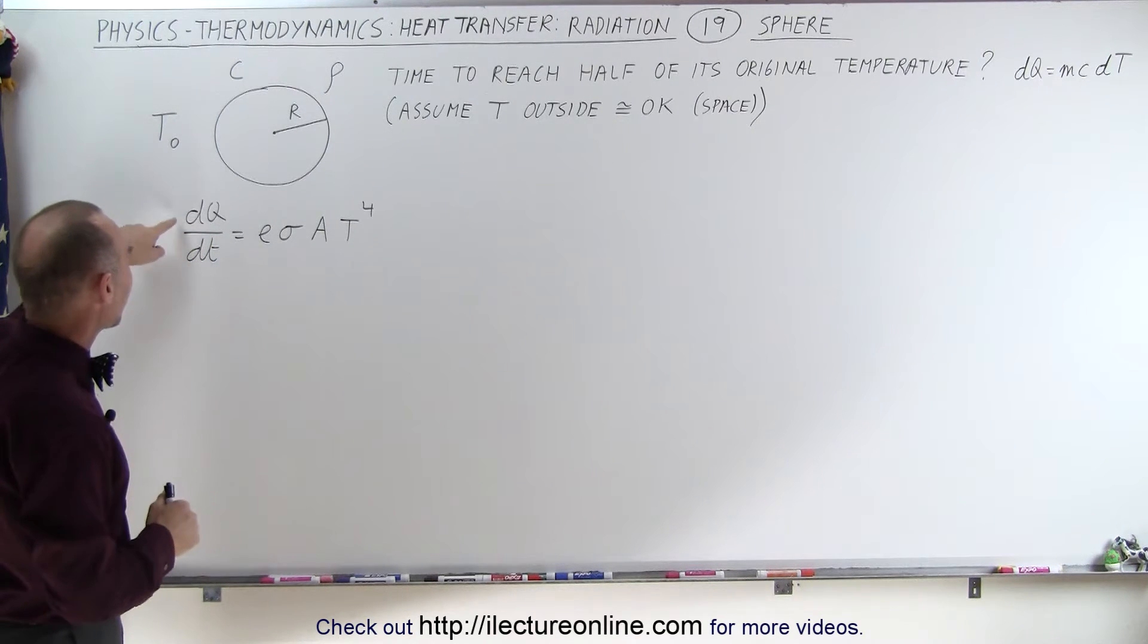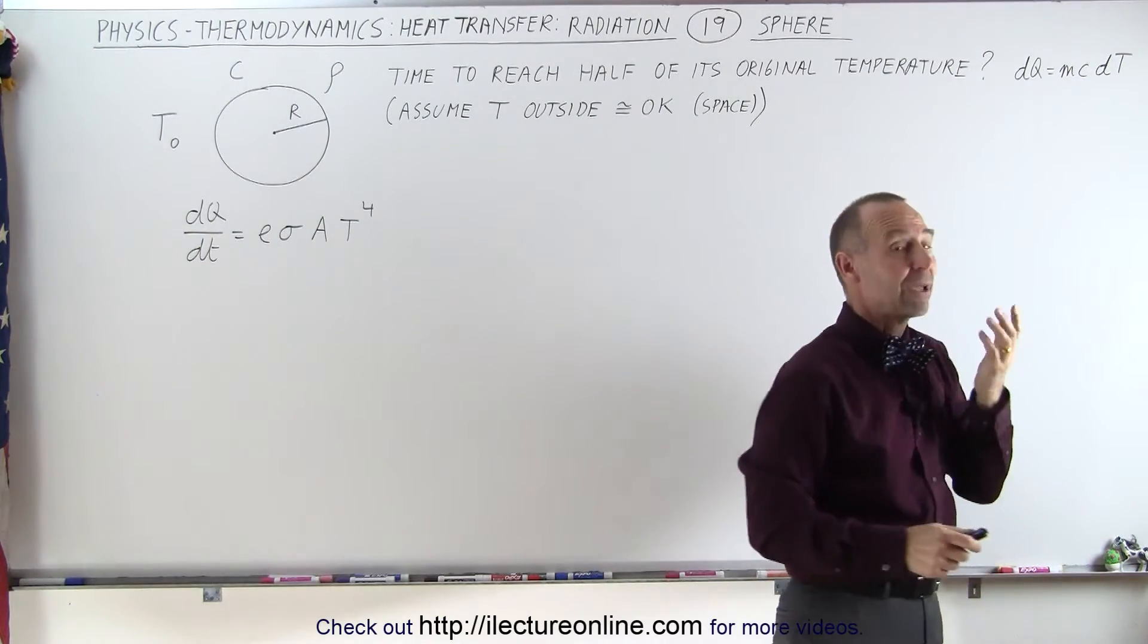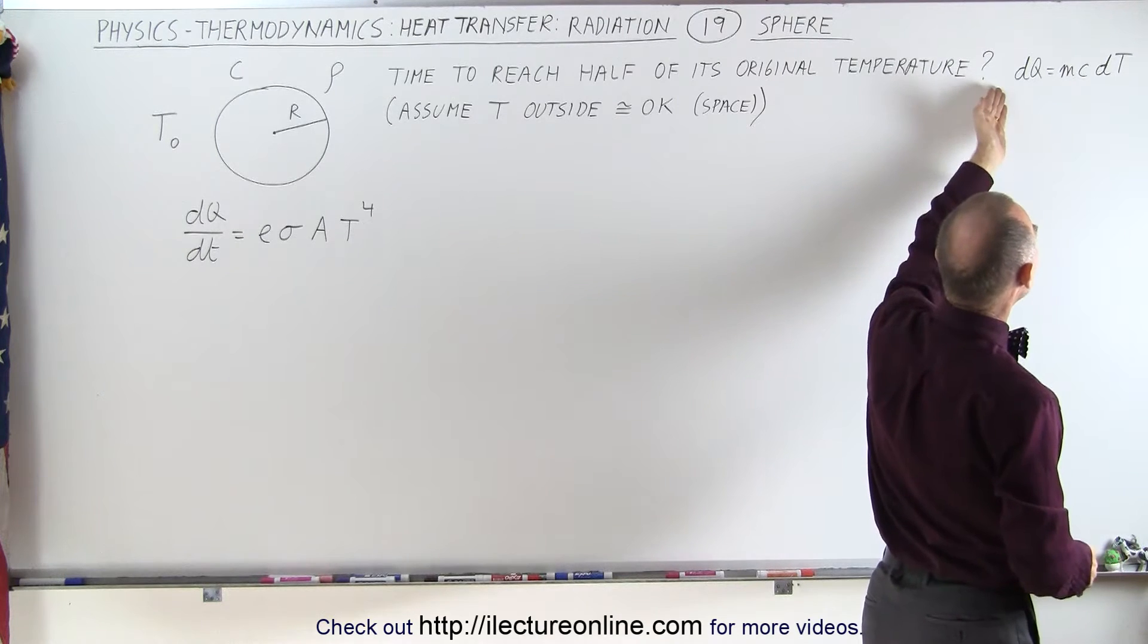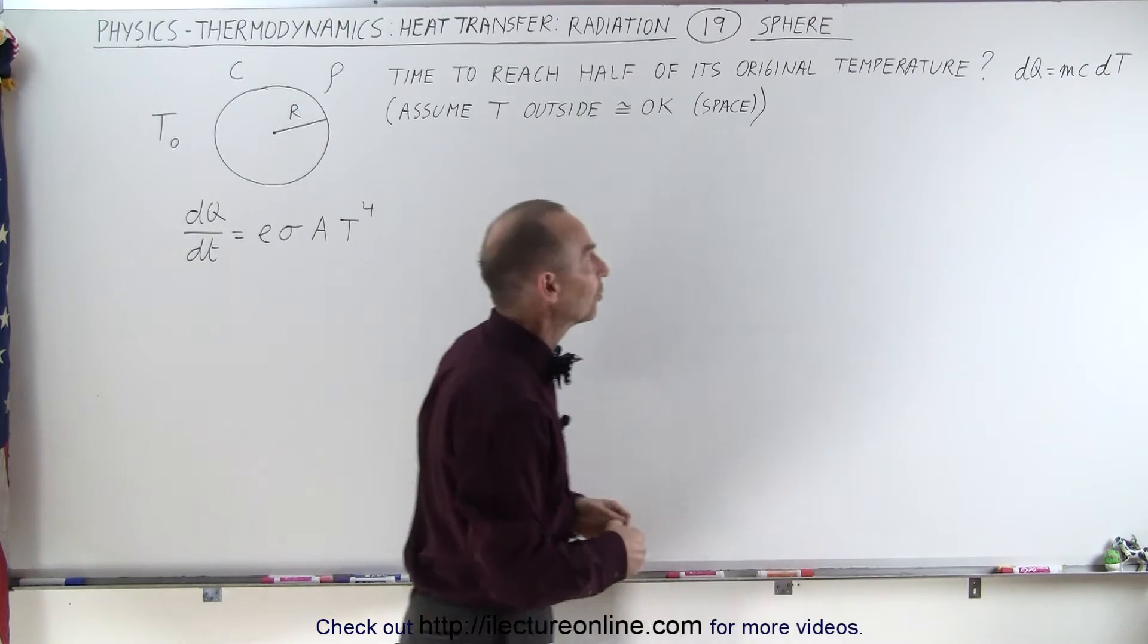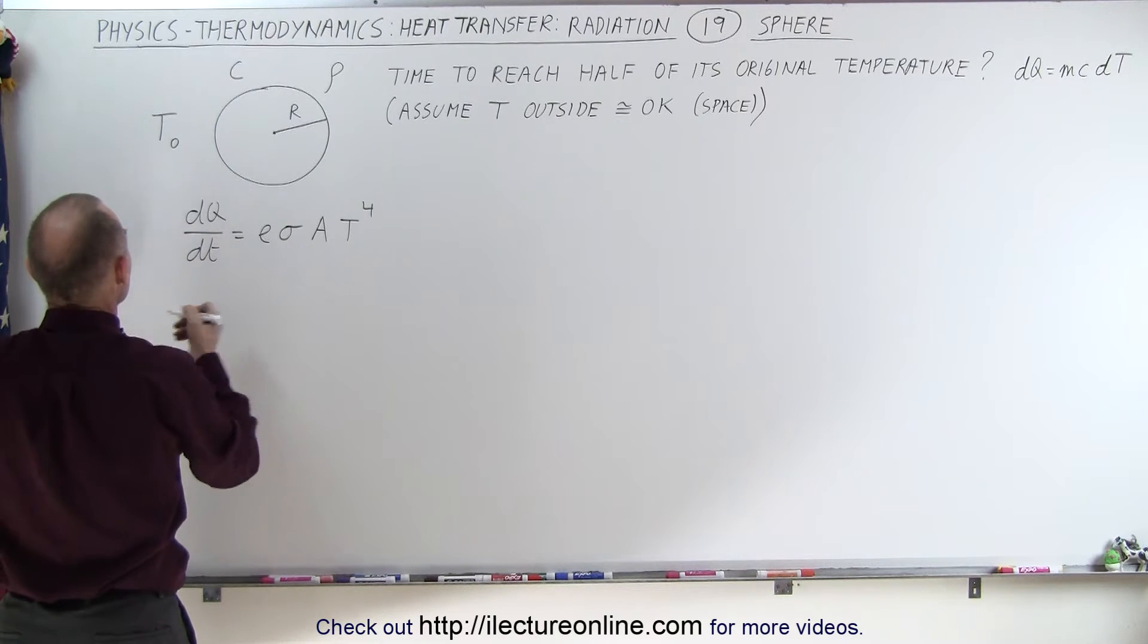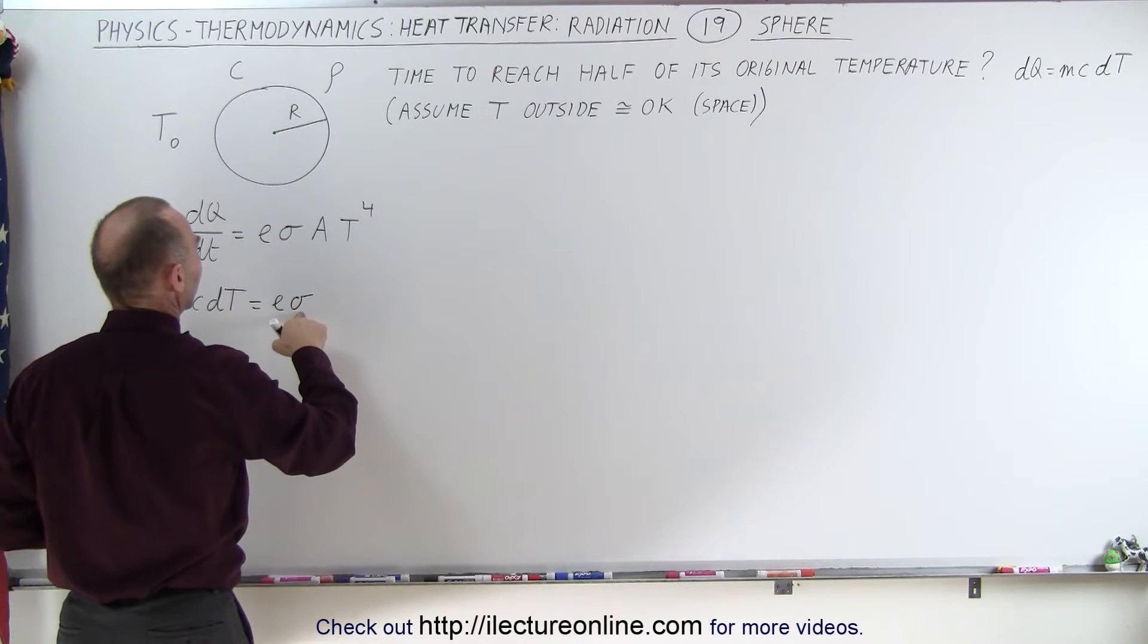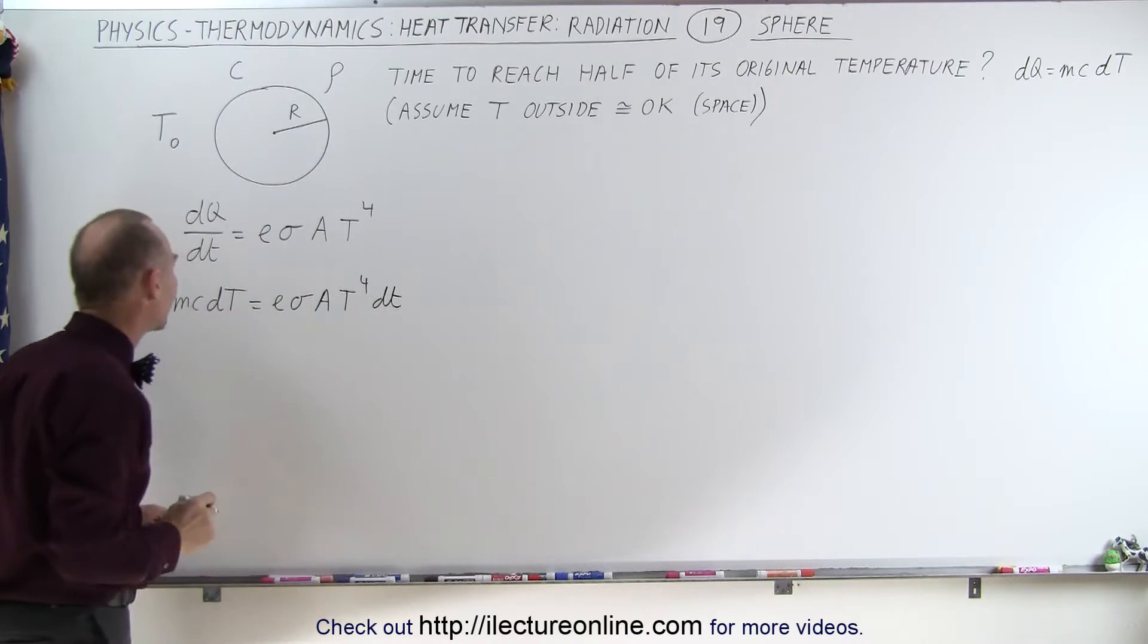Now, instead of writing dQ, we're going to need dQ equals mc dT. We have to be careful. This means that any heat added to the object is equal to mc times the temperature increase. But if we take heat away from the object, then this will be a negative temperature increase or a temperature decrease. So we're going to write this as minus mc dT is equal to epsilon sigma A T to the fourth power and dT for time, the change in time.